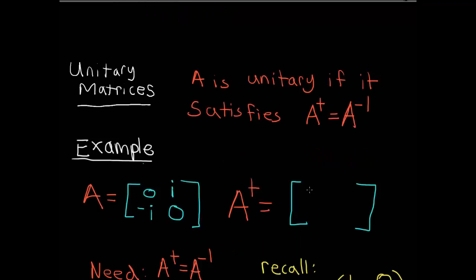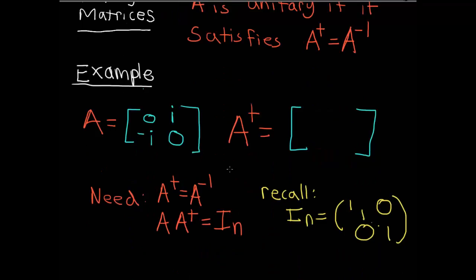A simple example of a unitary matrix: A is equal to [[0, i], [−i, 0]]. We take the transpose, which gives [[0, −i], [i, 0]], and once we take the transpose and the complex conjugate we get [[0, i], [−i, 0]] — the same as matrix A. So this matrix A is actually Hermitian as well.